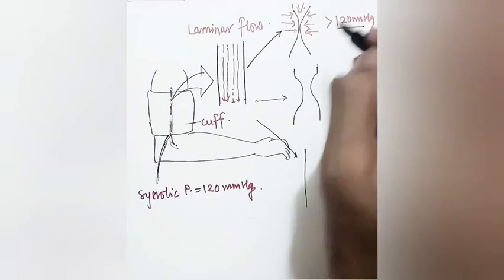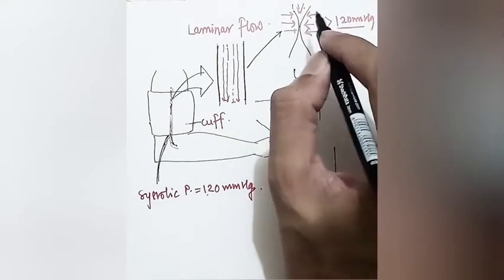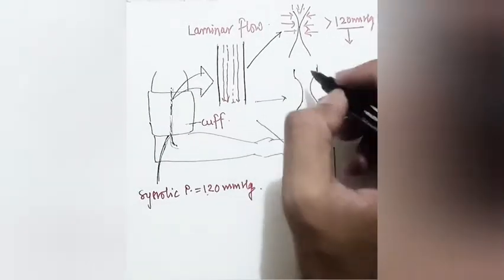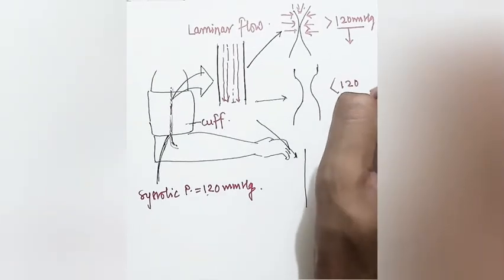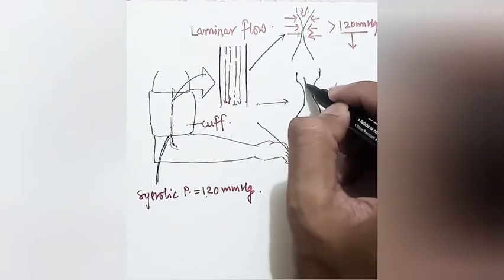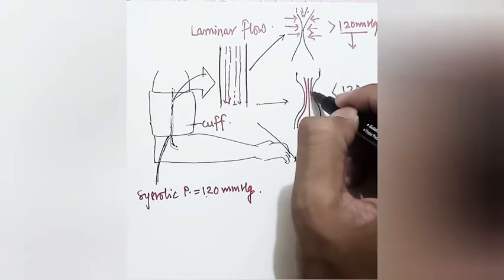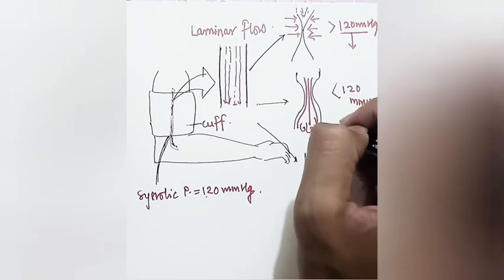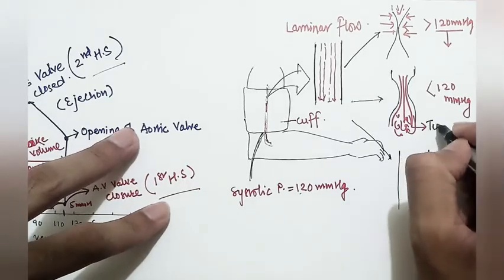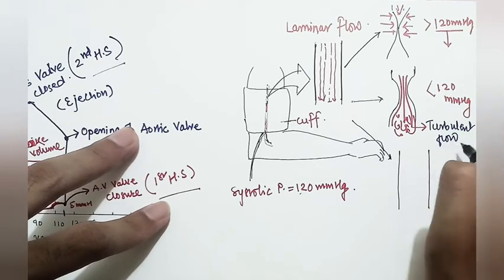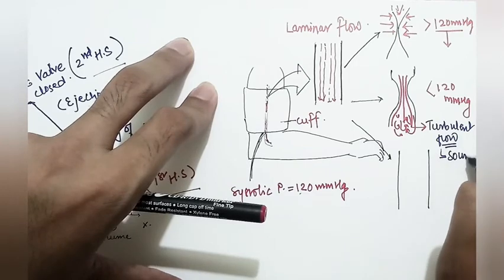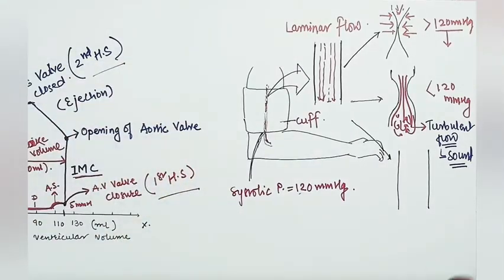When the cuff pressure drops just below 120 mmHg, the vessel begins to open intermittently. Blood forces through the partially compressed vessel, creating turbulent flow instead of laminar flow.